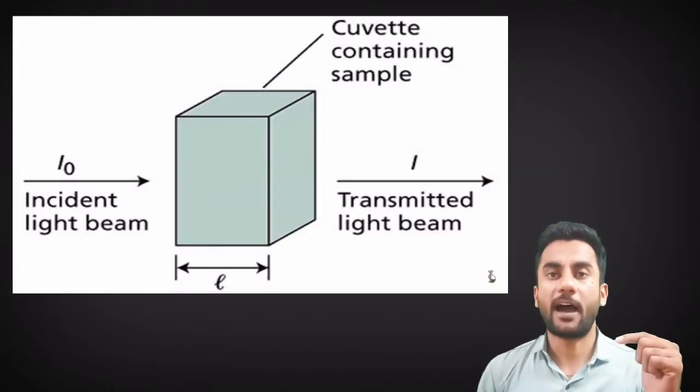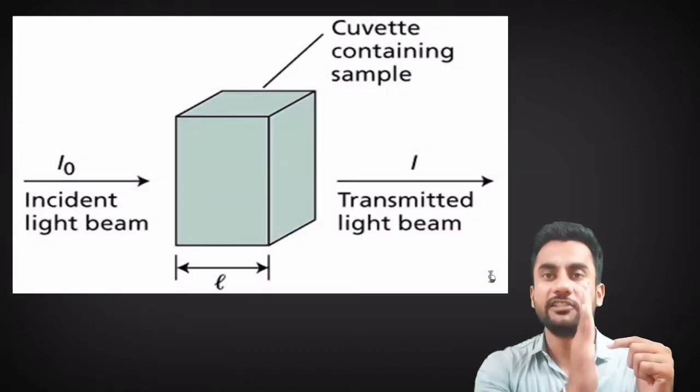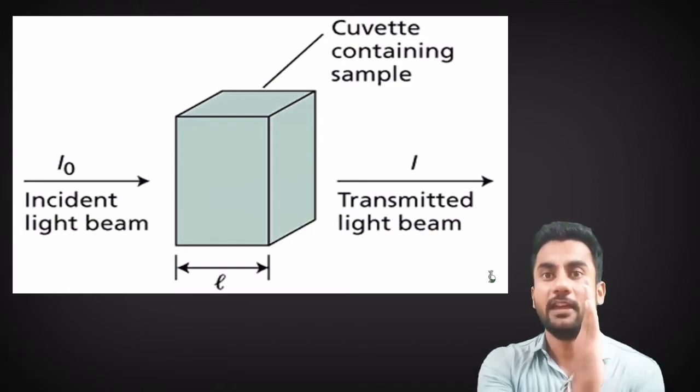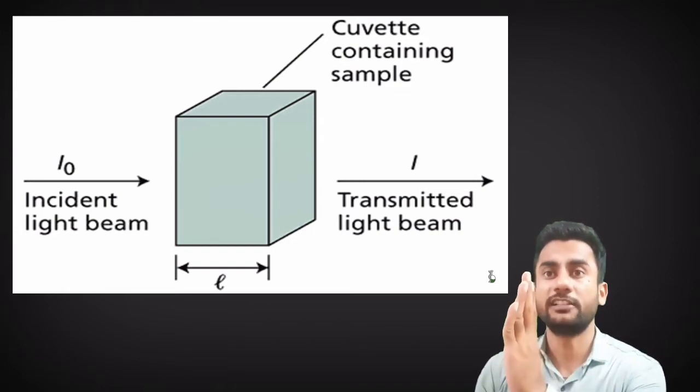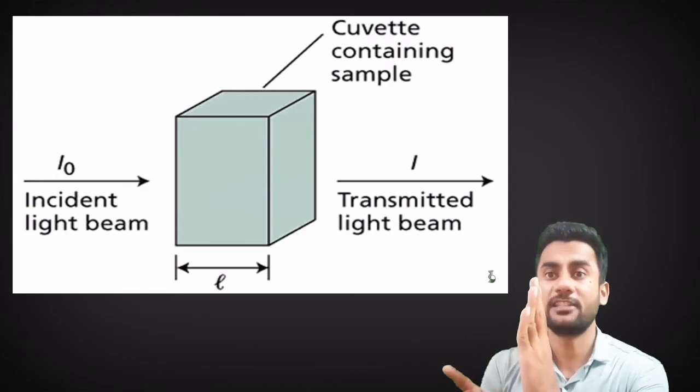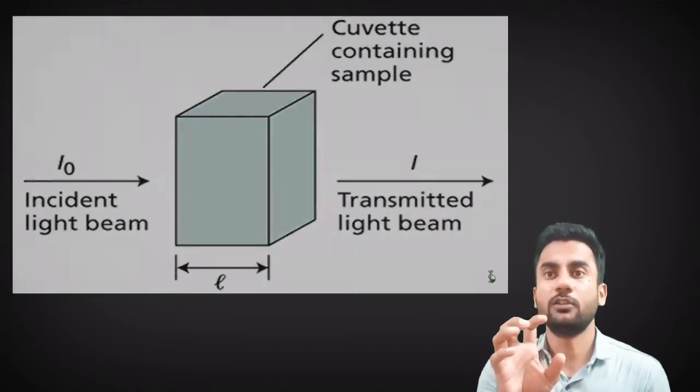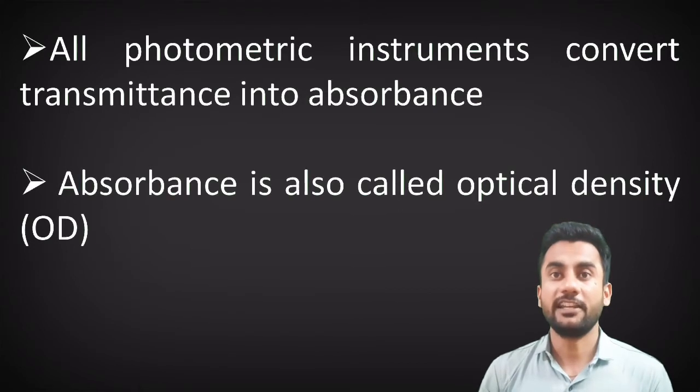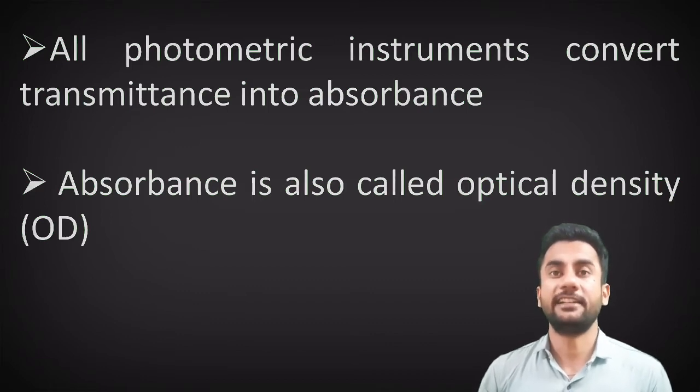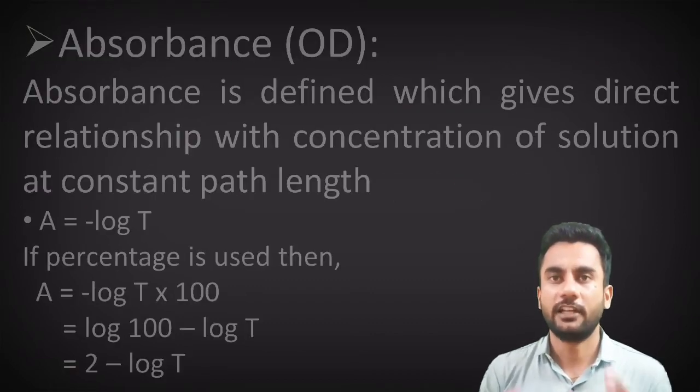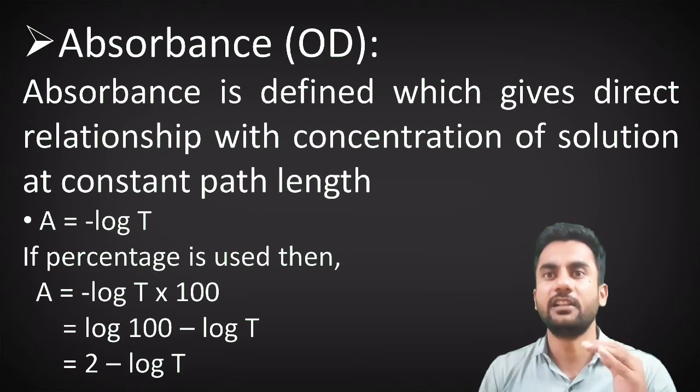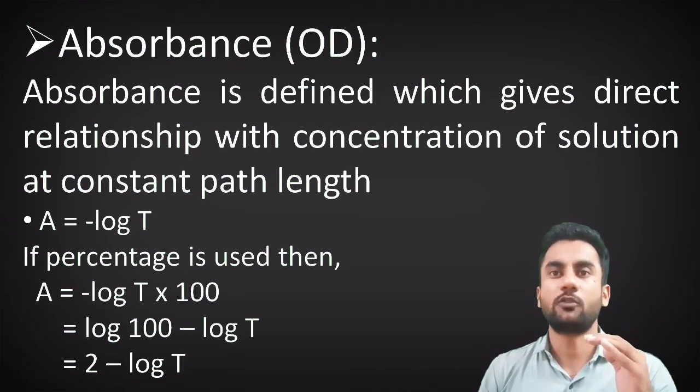When the incident light beam of I₀ intensity is allowed to incident on one surface of the cuvette containing sample having length L, then from another surface of the cuvette, the transmitted light beam is transmitted. And due to absorbance, always intensity I is less than I₀. The colorimeter is a photometric instrument, and all photometric instruments convert transmittance into absorbance. The absorbance is also called optical density.